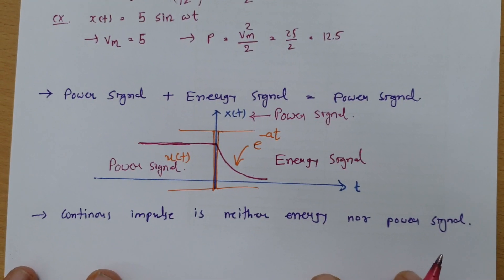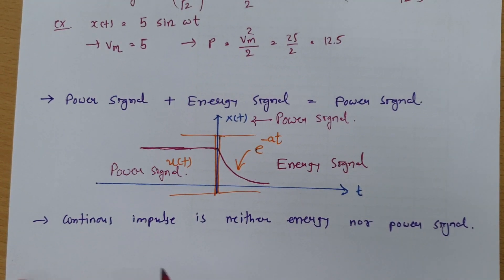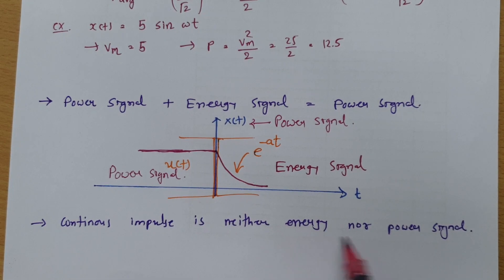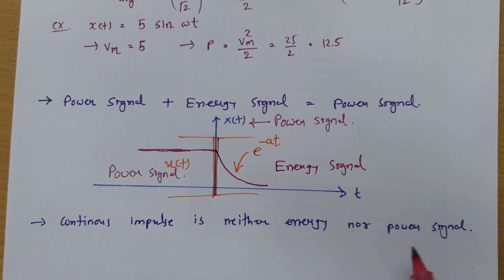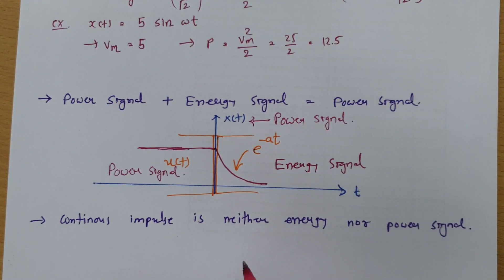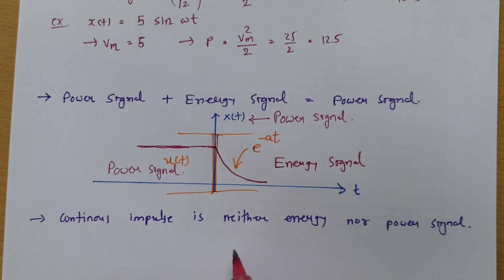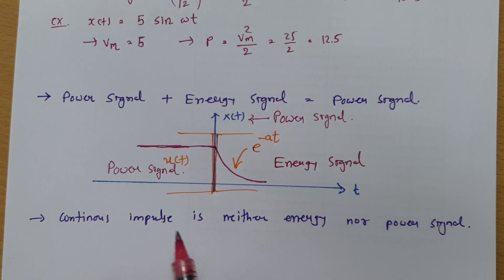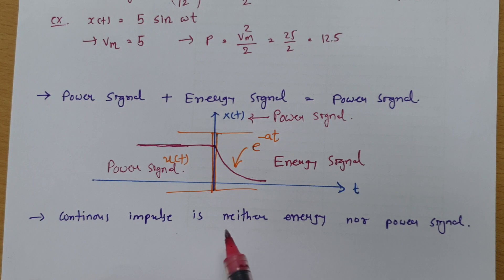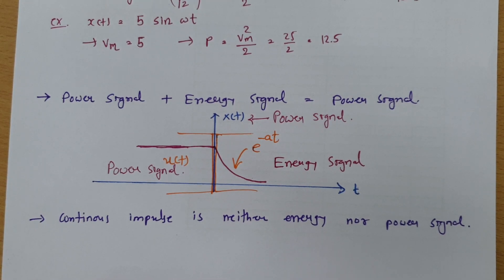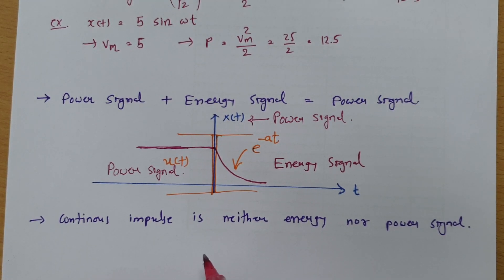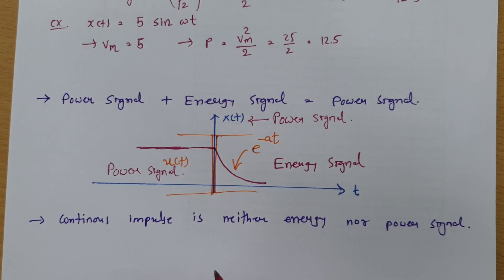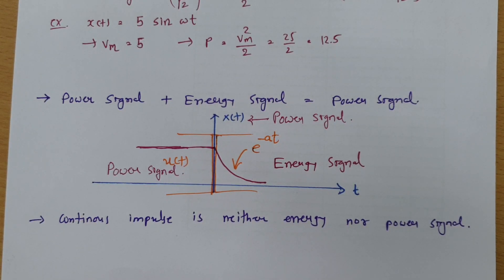One more important basic: a continuous impulse train is neither an energy signal nor a power signal. Whenever you have been given any continuous impulse, you should understand that it cannot be classified as energy or power.